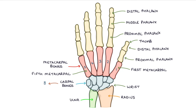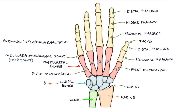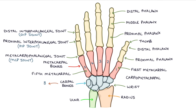Moving from the base to the tip of each finger, there is the metacarpophalangeal joint, or MCP joint, the proximal interphalangeal joint, or PIP joint, and the distal interphalangeal joint, or DIP joint. At the base of the thumb is the carpometacarpal joint, or CMC joint.